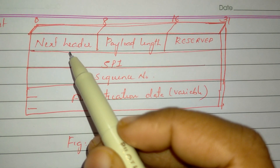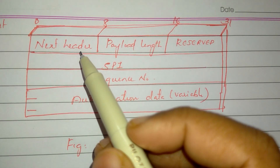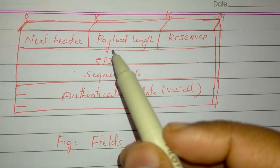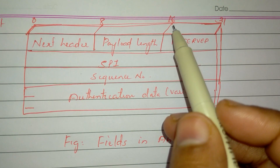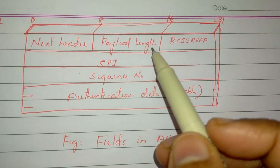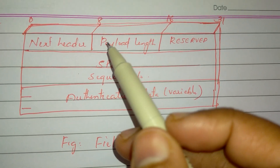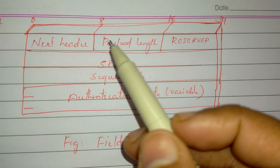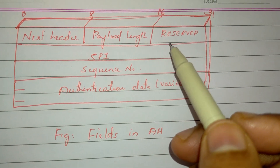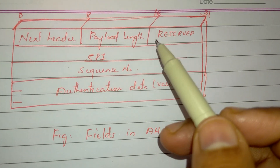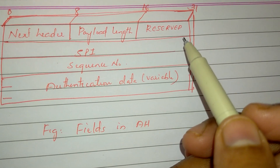It identifies the type of header immediately following that header. Then we will look at the length of the header — that is the authentication header length. Then we will look at the reserved field, which is 16-bit, for future use.